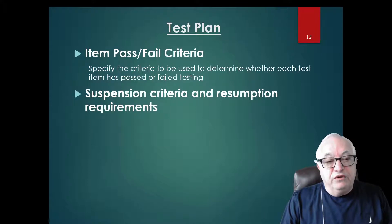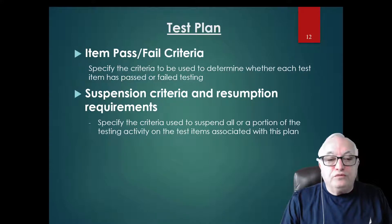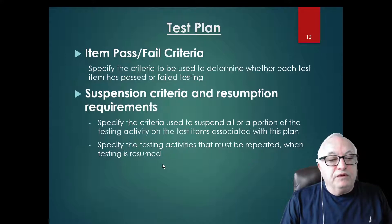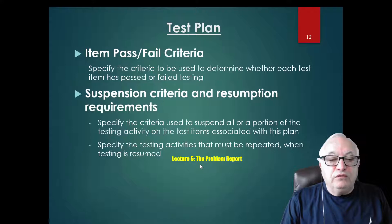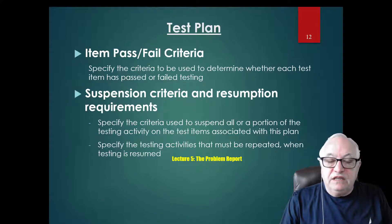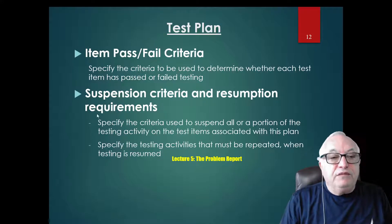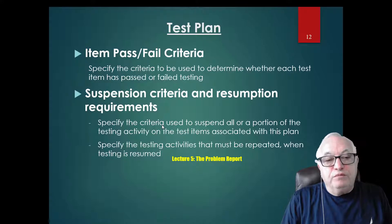Next, suspension criteria and reassumption requirements. You specify the criteria used to suspend all or a portion of the testing activity. Also specify the testing activity that must be repeated when testing is resumed. These criteria relate directly to lecture five's problem report — for example, where you would state that a fatal failure requires stopping everything. The definition of 'fatal' comes from the pass-fail criteria and suspension requirements here.